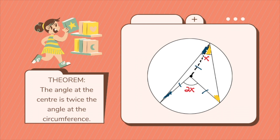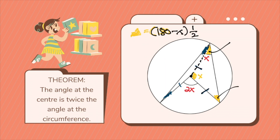Let's start with the yellow angle. Since it's a triangle and a triangle's total angle measure is 180, we can say 180 minus x, divided by 2 — or times one half — will be the measure of your yellow angle, because this is an isosceles, meaning two sides are equal, so both angles on its base will be the same measure.